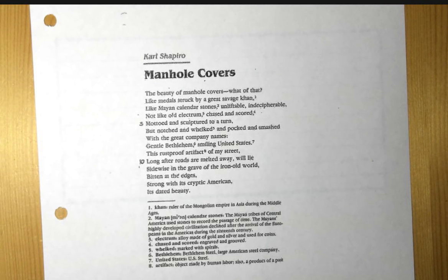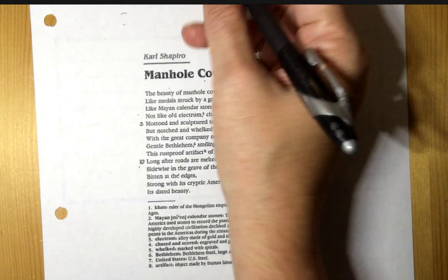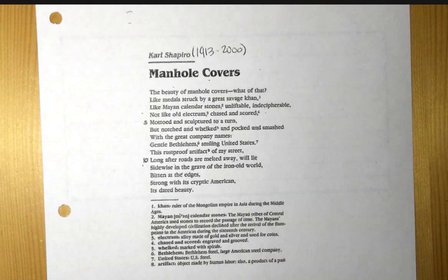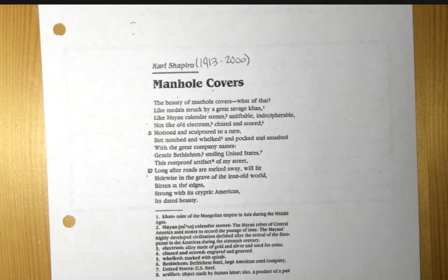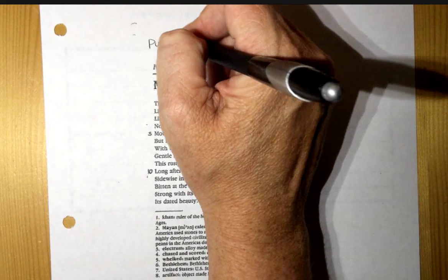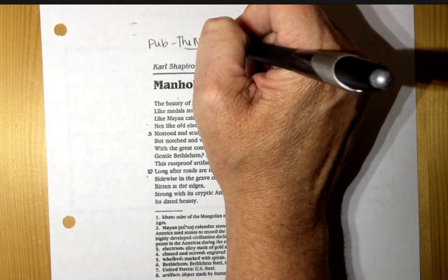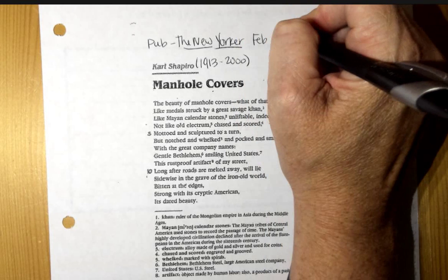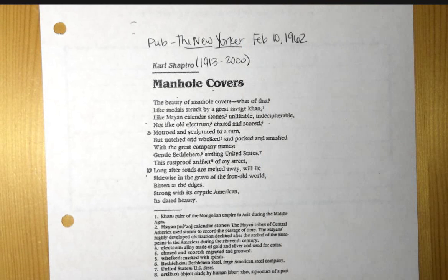So first of all, we're going to look at Karl Shapiro. Does anybody offhand know anything about Karl Shapiro? I don't think anybody would, and that is totally okay. So let me tell you a few things. He lived from 1913 to 2000, so he's fairly recent. This was first published in the New Yorker — which is a magazine, so we underline it — in February of 1962. Sometimes you get that information, sometimes you don't.